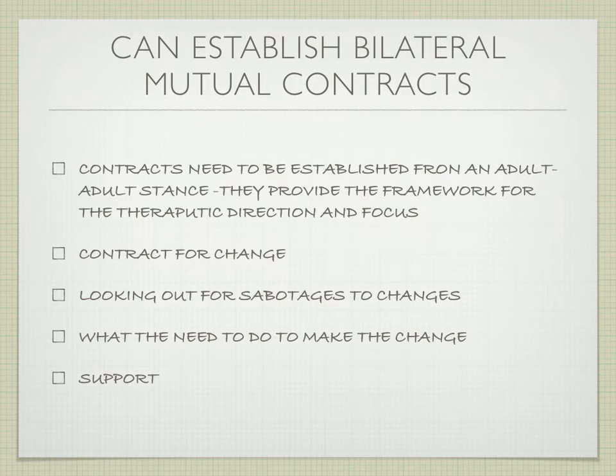You also need to talk about the sabotage to change at the beginning. When you make the contract — for example, somebody says they'd like to be more relaxed rather than depressed — you need to ask the person how they might sabotage themselves. Often the contract comes out of the sabotage process question. You need to ask what they need to do to make that change and what support they have. Contracts are important and you usually spend quite a bit of the 20 minutes making the contract.